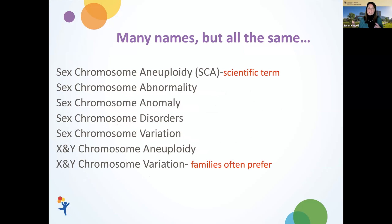From this group of conditions, there are a lot of different terms that are used, but they're really all referring to the same conditions. The scientific term most commonly used is sex chromosome aneuploidy, seen frequently in medical journal articles. They can also be referred to as sex chromosome abnormalities, anomalies, disorders, or variations — or X and Y chromosome variations, the term most often preferred by families.